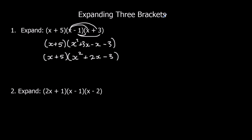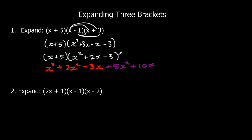Now we expand these two brackets — x times each term, and then 5 times each term. x times x squared is x cubed. x times 2x is 2x squared. x times negative 3 is negative 3x. Then 5 times x squared is 5x squared. 5 times 2x is 10x. And positive 5 times negative 3 is negative 15. Collecting like terms: x cubed plus 7x squared plus 7x minus 15.